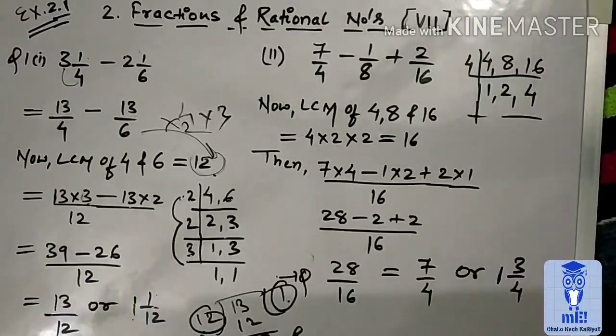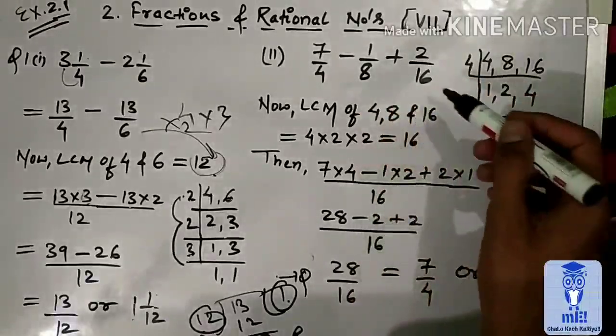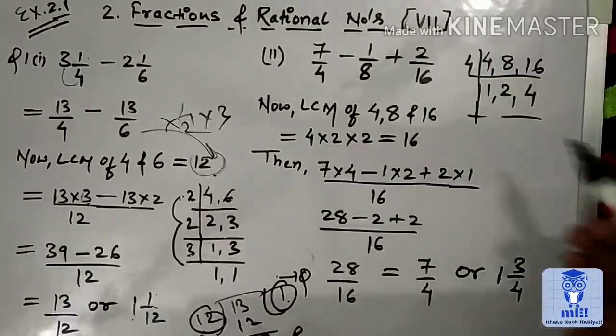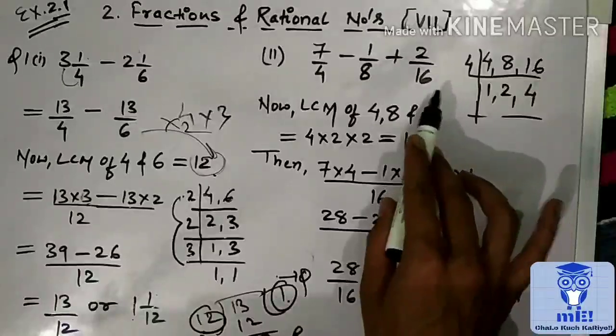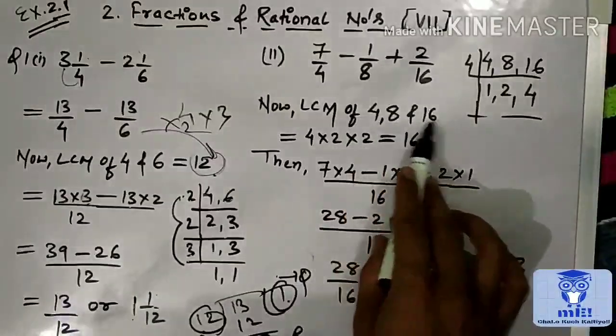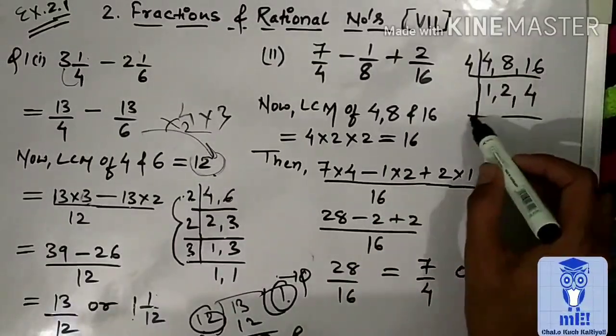Move on to the next second part. 7/4 minus 1/8 plus 2/16. Again, here, denominator terms, all three are different. Means, we have to find out the LCM of all three numbers. 4, 8, and 16.